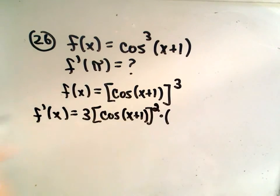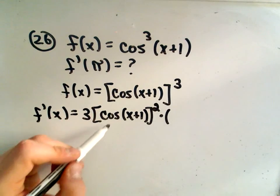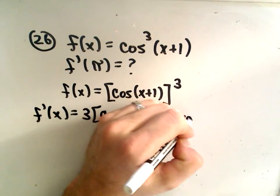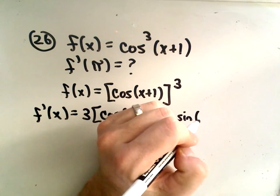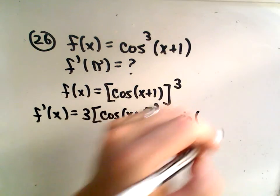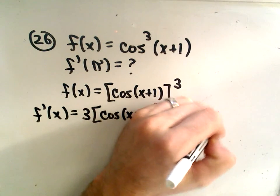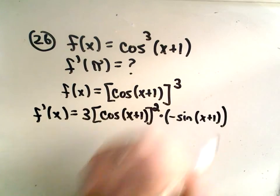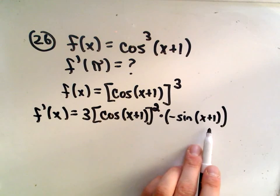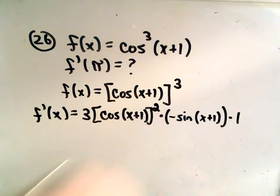We have to multiply by the derivative of the inside. Well, the derivative of cosine will be negative sine. Again, we leave the inside alone, x plus 1. Now we have to multiply by the derivative of what's inside the parentheses, but that would just be a times 1.